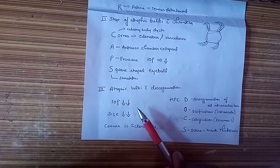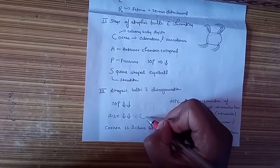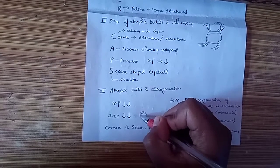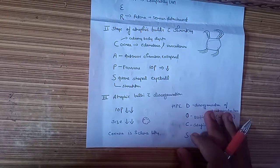The other features we see in this stage: IOP is very very low, the size of the eyeball is markedly decreased, it is shrunken to a very low level like a crumpled paper.